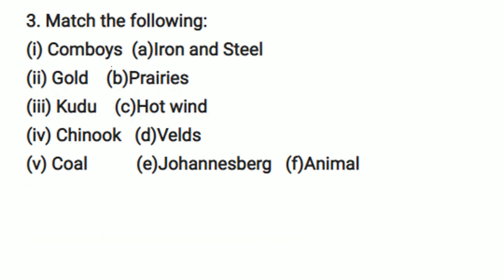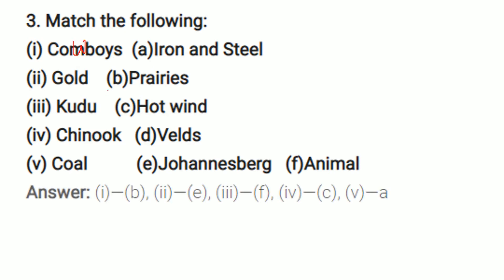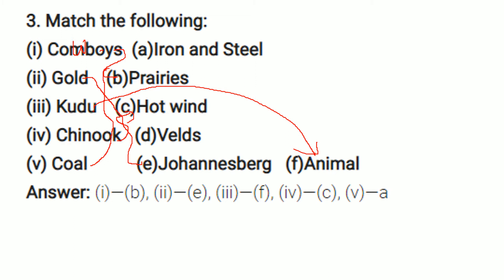For the match-the-following section: Cowboys are matched with the prairies, and gold is matched with Johannesburg. Kudu is a type of animal, so it is matched with animal. Chinook are hot winds, and coal is matched with iron and steel.